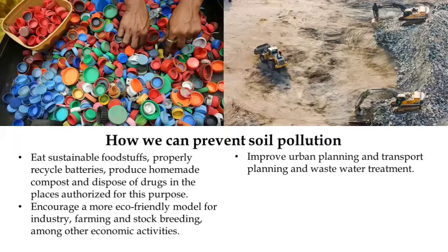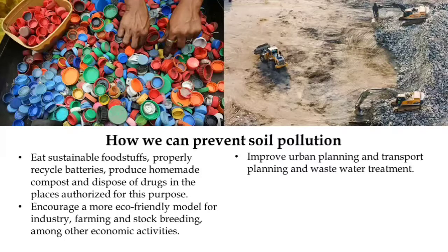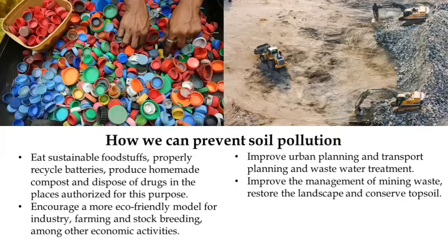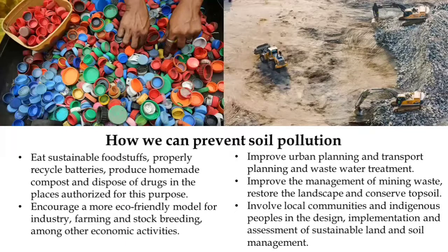Better urban and rural planning means making communities cleaner — placing dustbins at key locations so people walking by can dispose of waste properly. Proper wastewater treatment should be established. We should also improve the management of mining waste, restore landscapes, conserve topsoil — since topsoil is the most fertile layer — and involve local communities and indigenous people in sustainable land and soil management.